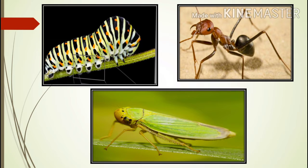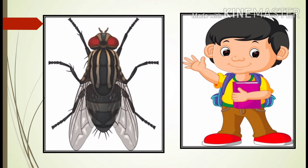Observe these pictures and imagine that you were a tailor for these insects and had to make trousers for them. Their trousers will be different because they have more legs. Now observe this picture and tell me how is the fly's body different from this boy's body. In this picture the boy has 2 hands and 2 legs, but the fly has 6 legs. This fly also has wings but the boy does not have wings.